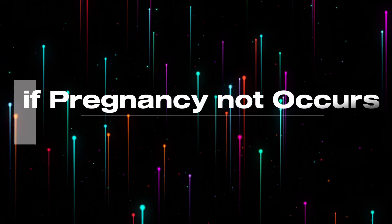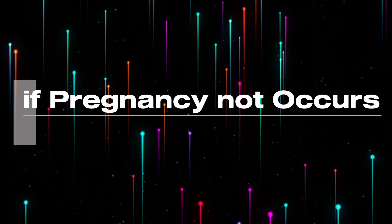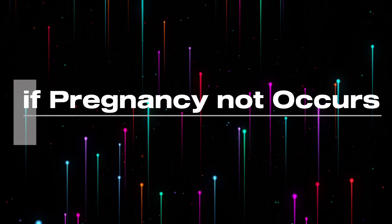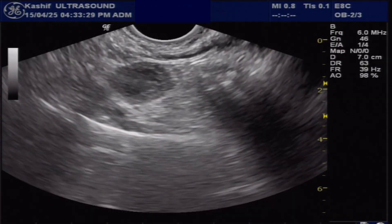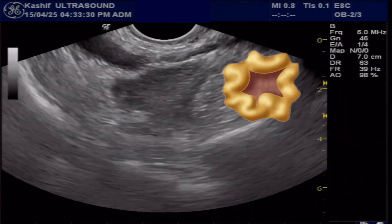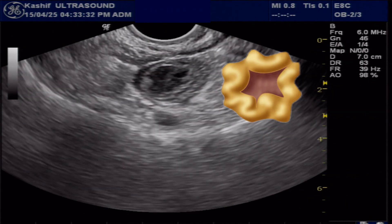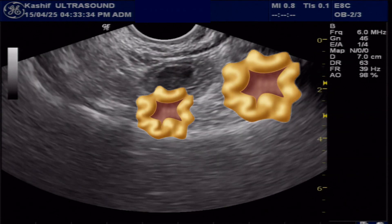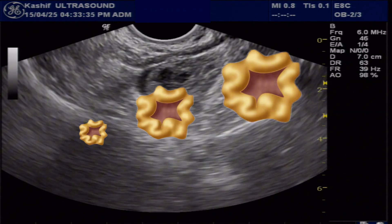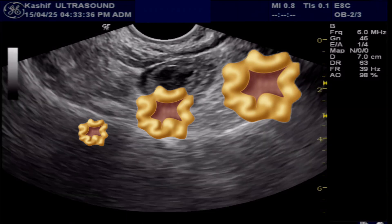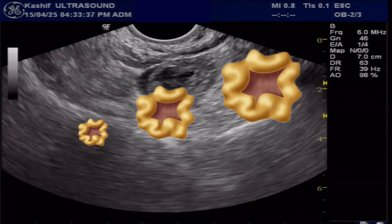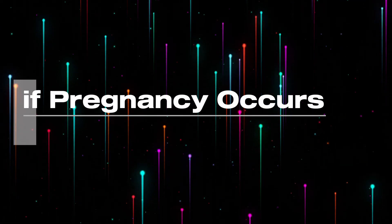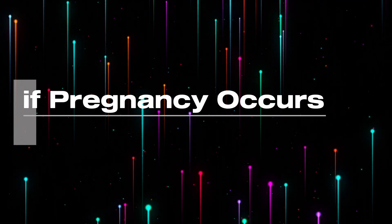If the released egg is not fertilized and pregnancy does not occur, the corpus luteum begins to break down about 10 to 14 days after ovulation. Its progesterone level decreases and this triggers menstruation.